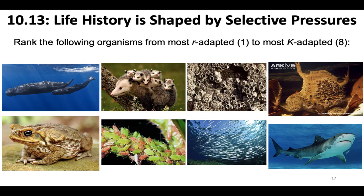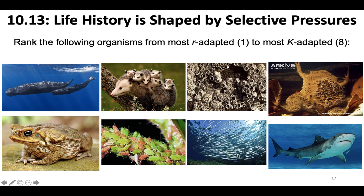This last slide is a class activity where you'll try to rank the following organisms from most R-adapted to most K-adapted: frog, sperm whale, possum, barnacle, Surinam toad — they carry babies in slime on their back — shark, schooling fish, and aphids. There's no 100% right answer here. We'll talk about all this in class when I see y'all in person.